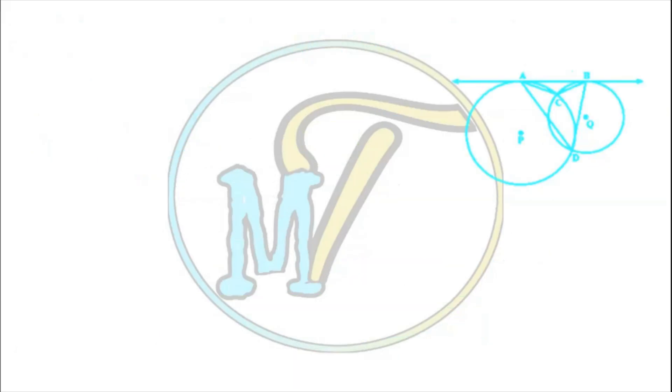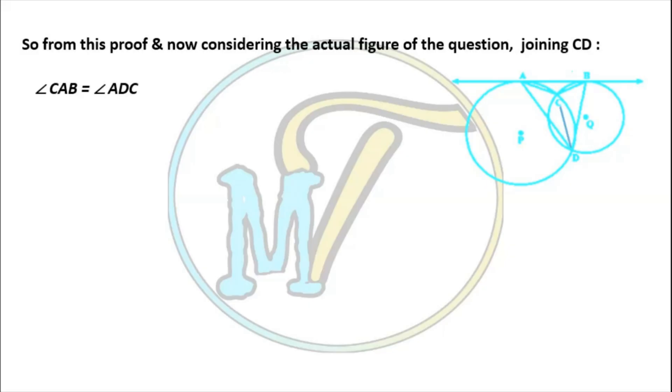So from this proof and now considering the actual figure of the question, joining CD, we can write that angle CAB equals angle ADC and angle CBA equals angle BDC.